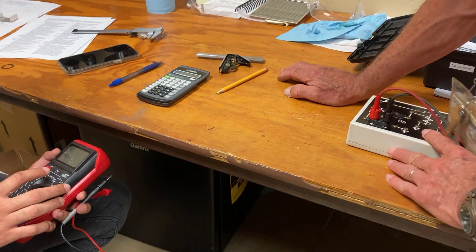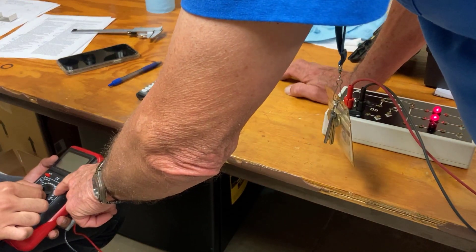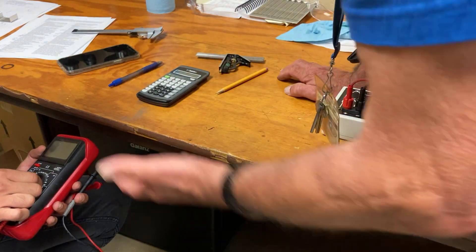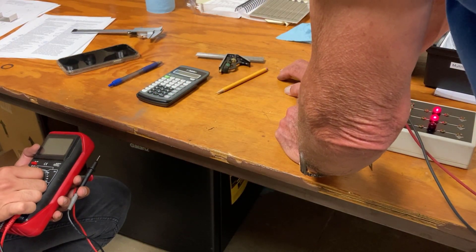And when we have a 12 volt circuit, you'd want to set it on the voltage just above 12, the closest, which is the 20, which is I think where it's set.